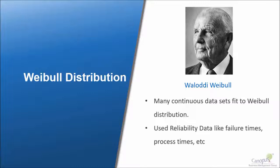Weibull distribution is named after the Swedish mathematician Waloddi Weibull, around the 1930s. When Weibull was studying reliability and cycle time related data, he found that many continuous data sets fit into a distribution which was subsequently named after him. Weibull distribution is primarily used to study reliability data like failure times and process lead times.